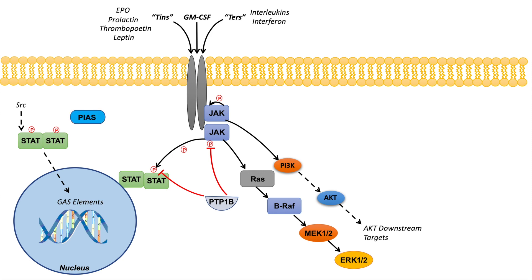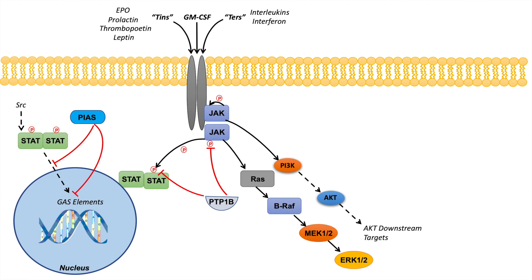Another family of regulators includes protein inhibitors of activated STATs, or PIAS. These essentially inhibit the transactivation of STAT proteins, and they also prevent STAT proteins from binding to gamma-activated sequence elements in the DNA — prohibiting STAT homodimers from inducing gene expression.